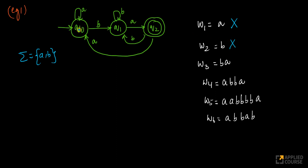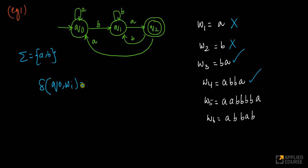But what if I start here and have b followed by a? I reach a final state, which means this is accepted. What if I have 'abba'? That is also accepted because I've reached a final state. If I use the transition function starting at the initial state and reach q2, which is a final state, then that input wi is accepted.